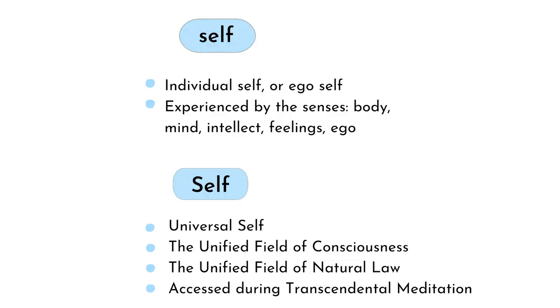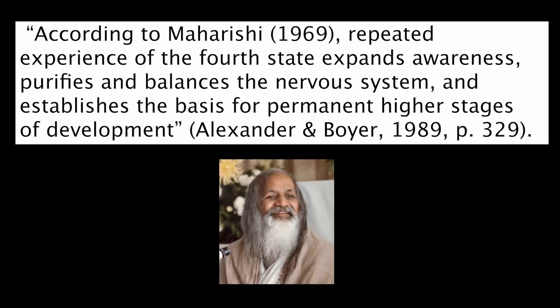When you habituate the state of transcendental consciousness, it becomes permanent in your waking state. Cosmic consciousness is a state of duality, experiencing self along with Self — the small-s self is the individual or ego self experienced by the senses, and the capital-S Self is the universal self accessed during transcendental meditation, which experiences the unified field of consciousness.